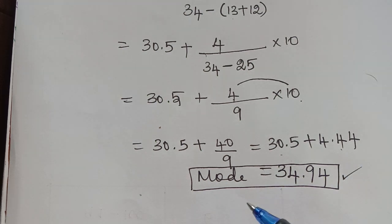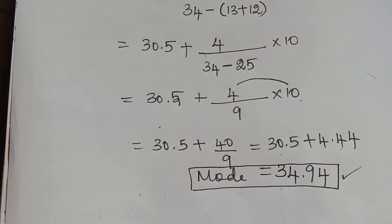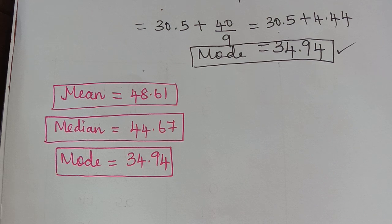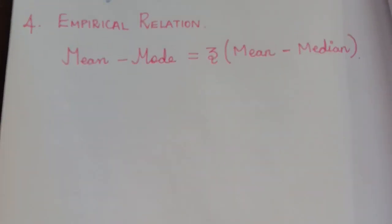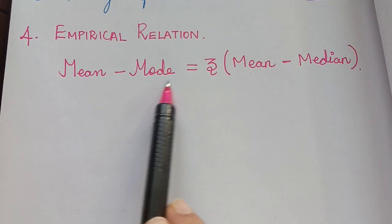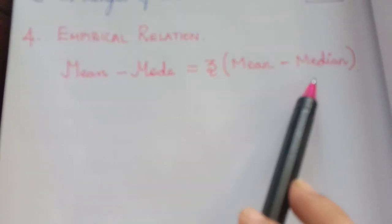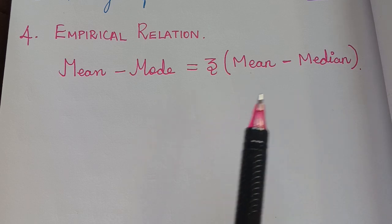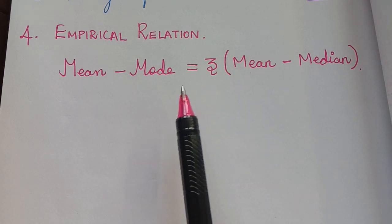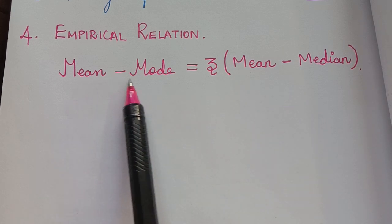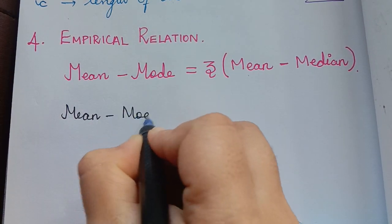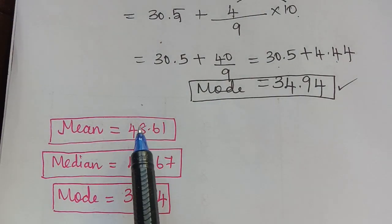We have now found all three measures: mean, median, and mode. Let us write them together and verify the empirical relation, which states: Mean − Mode = 3 × (Mean − Median). We will substitute the values we found and check whether this relation is satisfied.